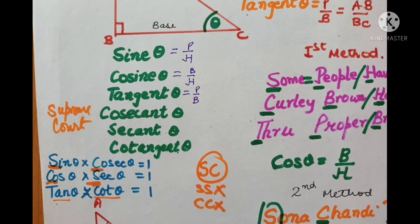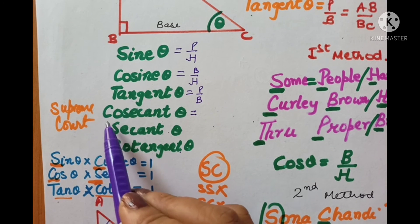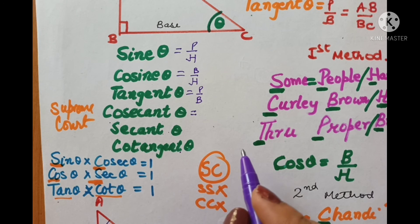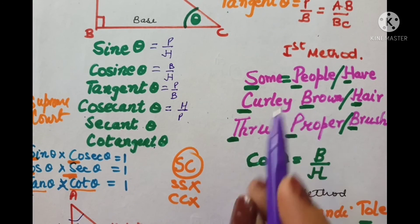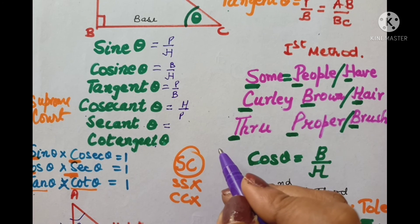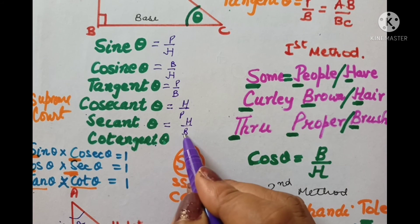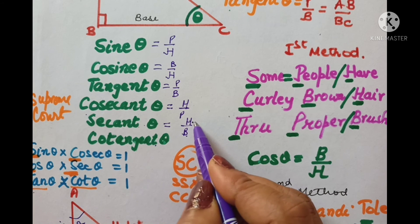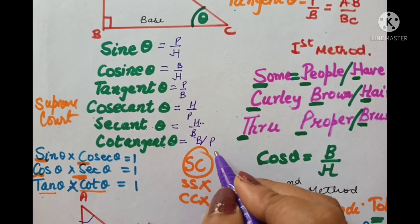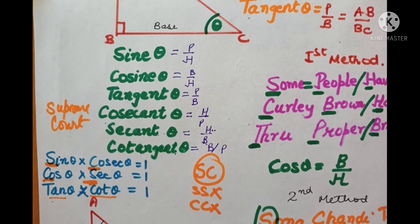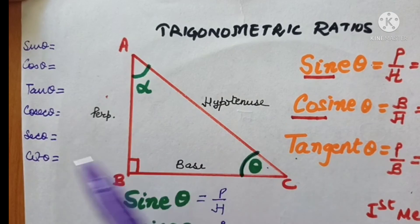Let us write down the formulae for these. When you have to write the formula for cosecant theta, remember it is the reciprocal of sine. Sine is 'some people have' — so write in reverse order: H upon P. For secant, it is the reciprocal of cos — cos is 'curly brown hair' — write in reverse order: H upon B. Cotangent is reciprocal of tangent — tangent is 'proper brush' — reverse gives B by P.